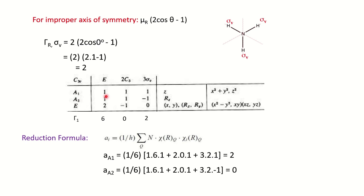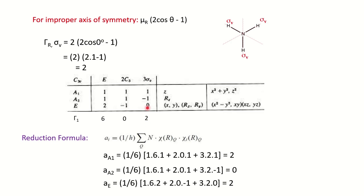For A2: a(A2) = (1/6)[(1×6×1) + (2×0×1) + (3×2×(−1))] = (1/6)[6 + 0 − 6] = 0. So A2 has no contribution. For the E representation (Mulliken symbol E): a(E) = (1/6)[(1×6×2) + (2×0×(−1)) + (3×2×0)] = (1/6)[12 + 0 + 0] = 2. So we have 2A1 + 2E present in the reducible representation {6, 0, 2}.